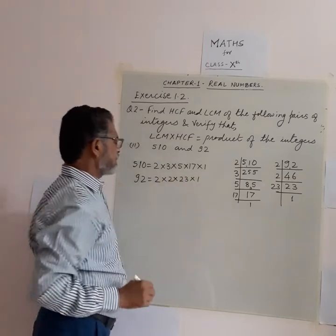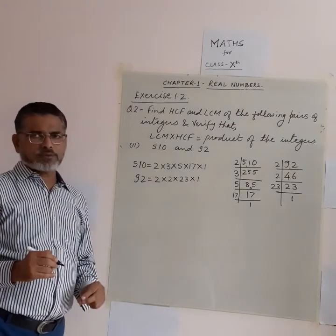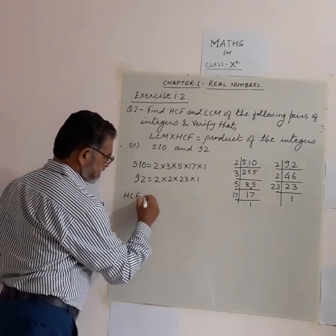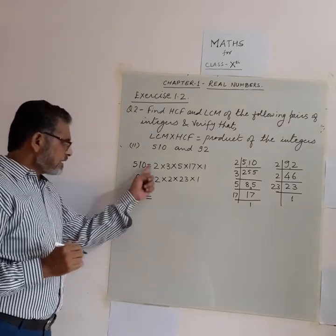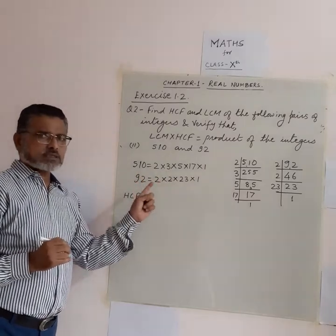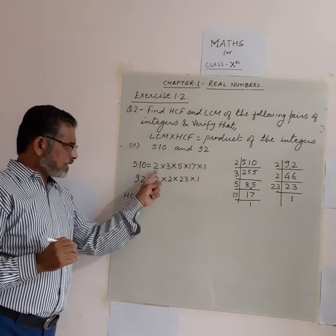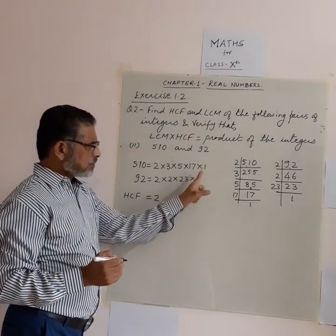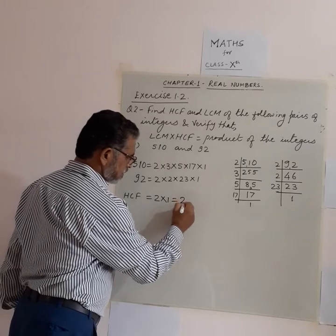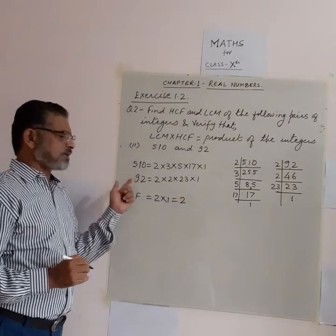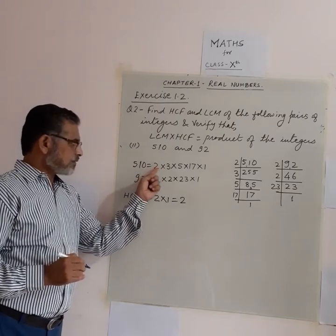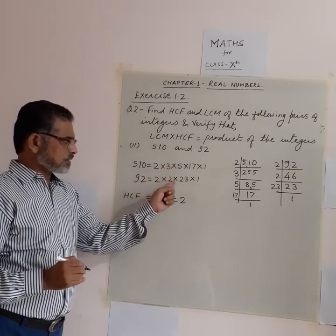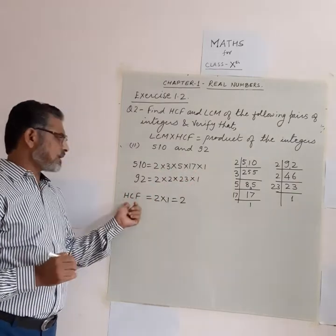We write: 510 = 2 × 3 × 5 × 17 and 92 = 2² × 23. Now to find the HCF, we look for common factors. The factor 2 is common to both, but 3 is not in 92, and no other factors are common. So HCF of 510 and 92 is 2.